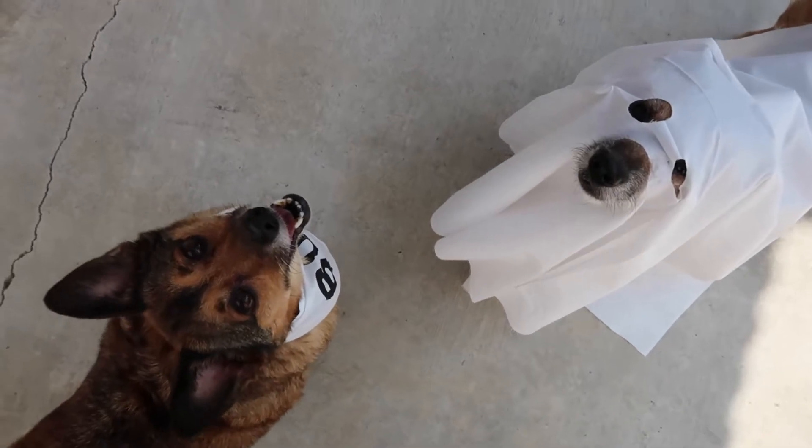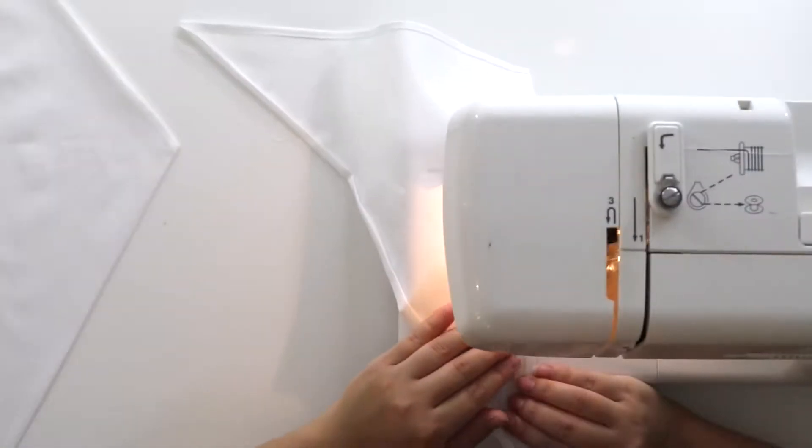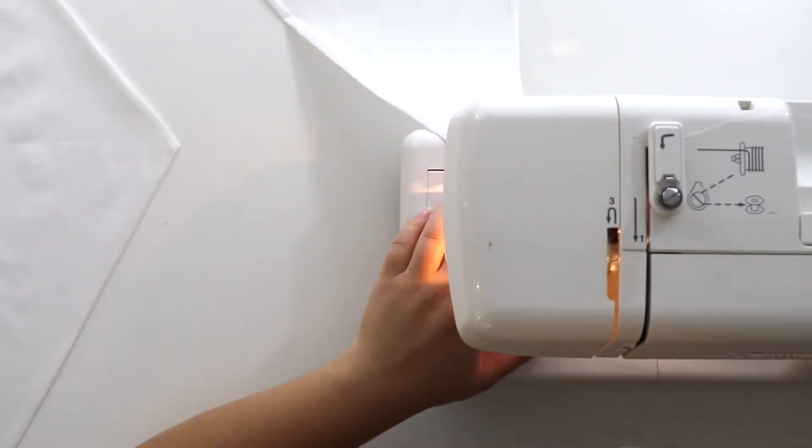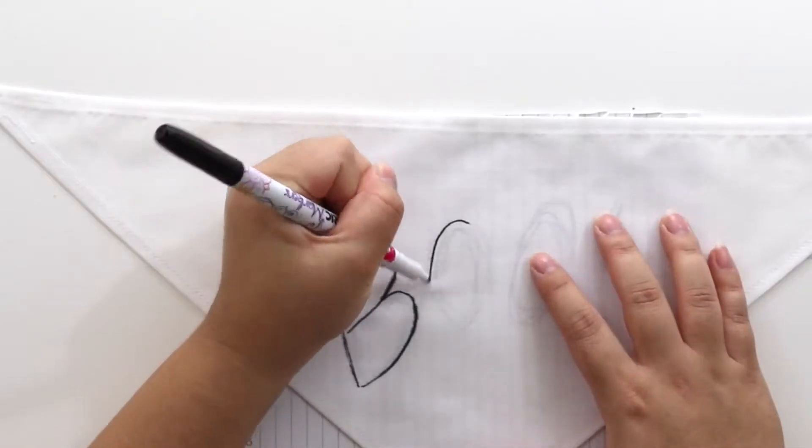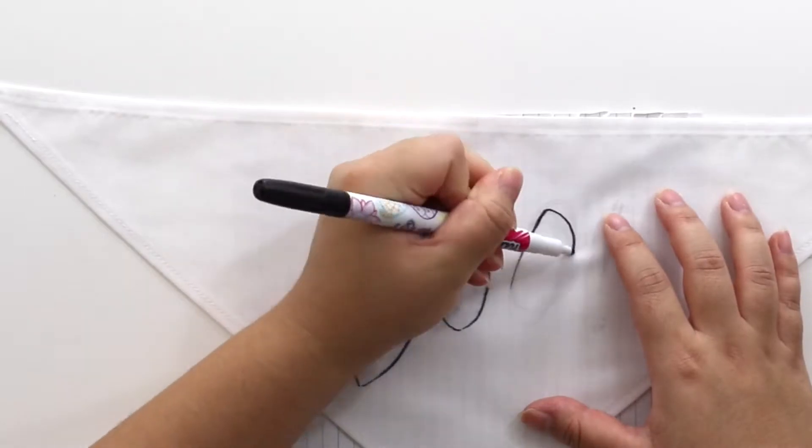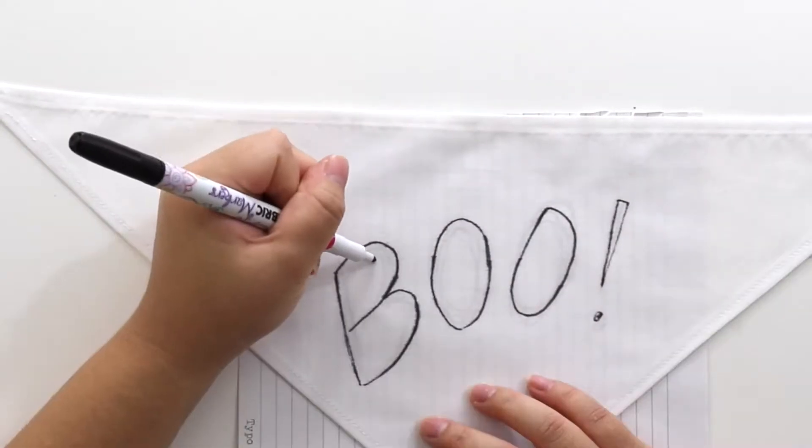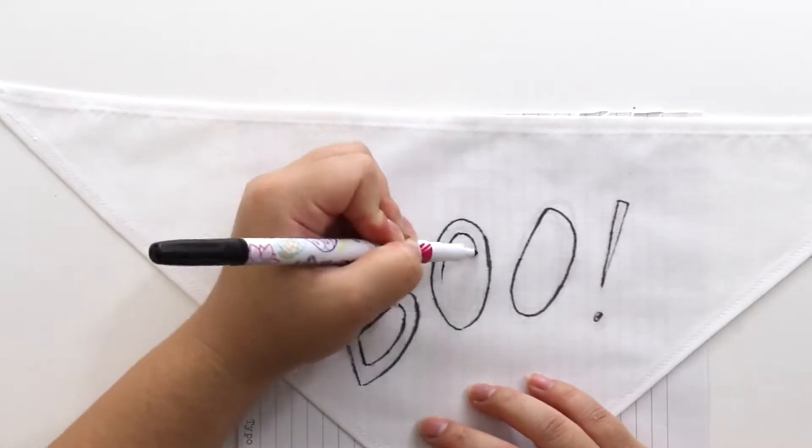First up are the ghost themed ideas. I sewed a bandana out of white cotton fabric. I tried using a fabric marker first, but realized it bled a bit and I wanted a clean graphic look. So instead, I used the fabric marker to write the base of my word only, which was BOO in block letters.